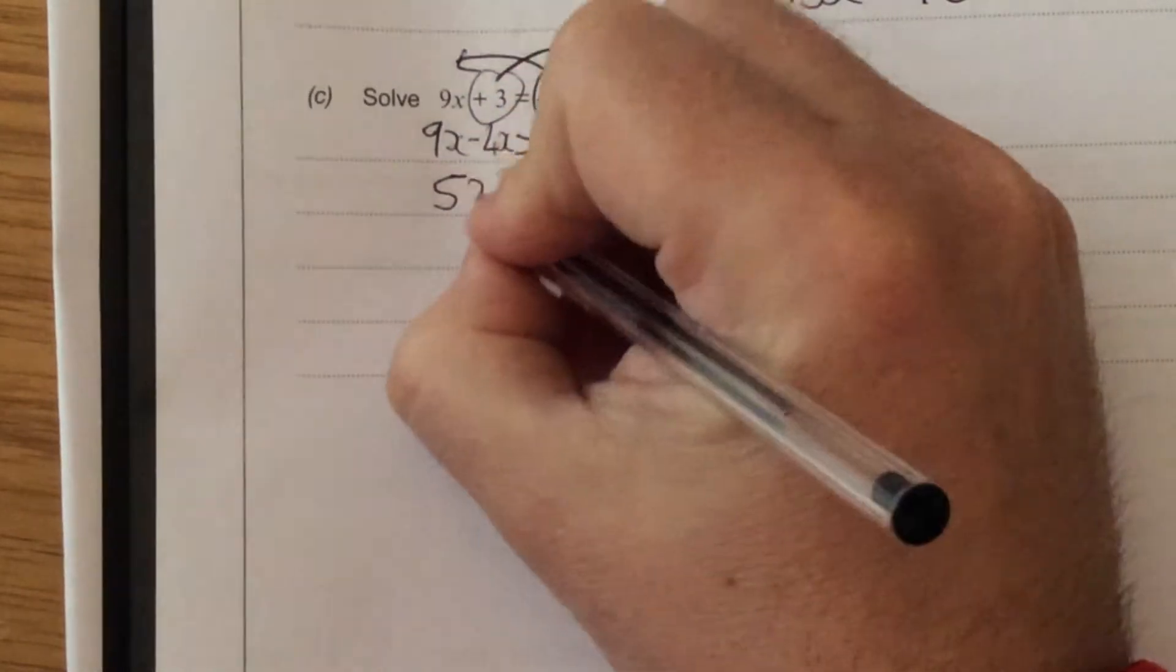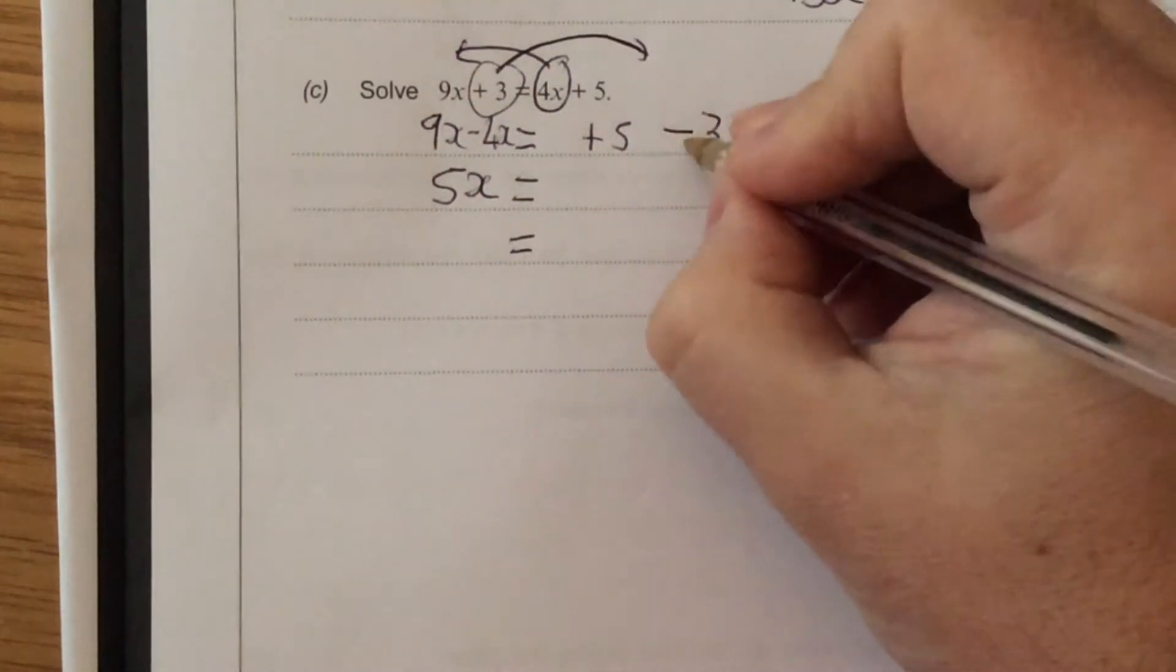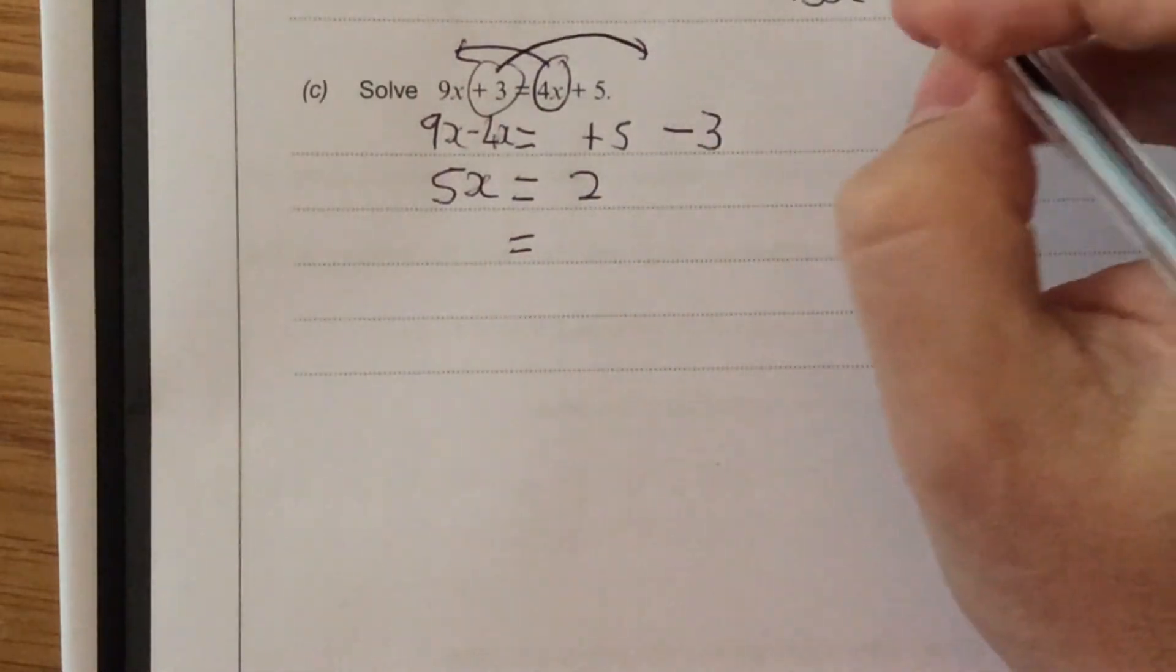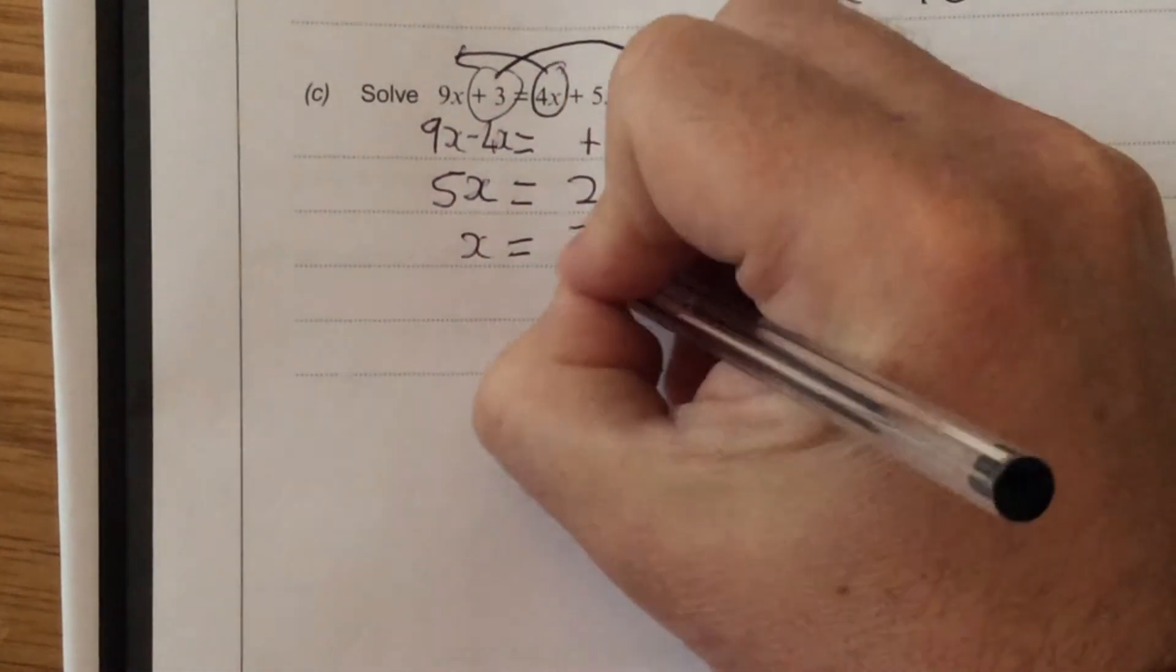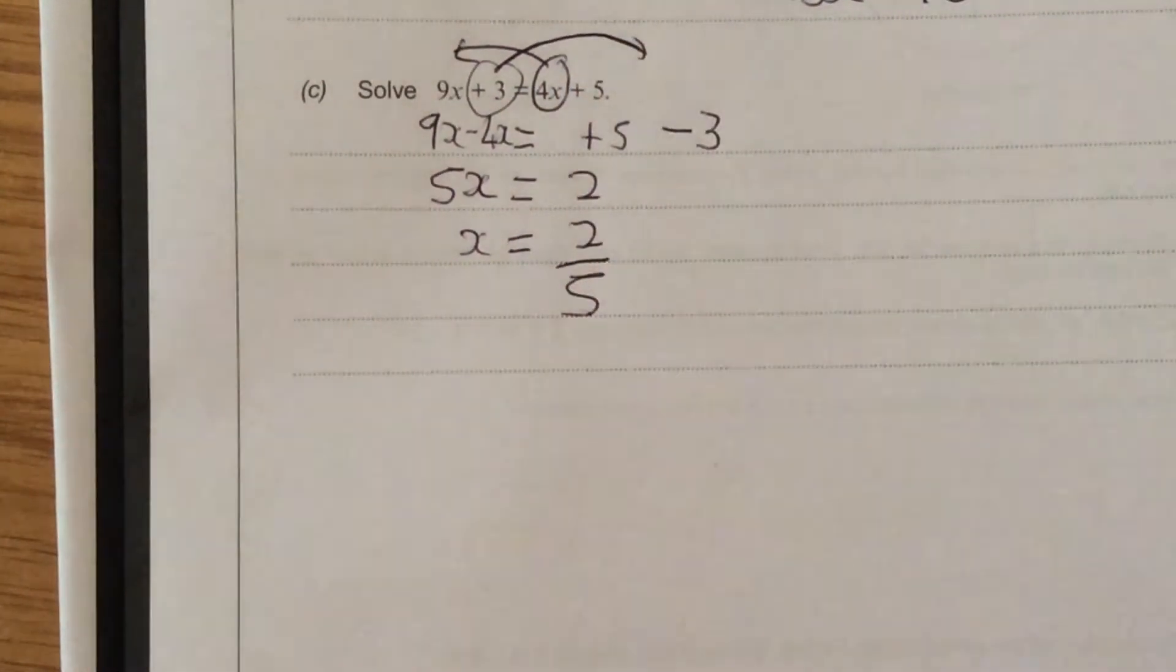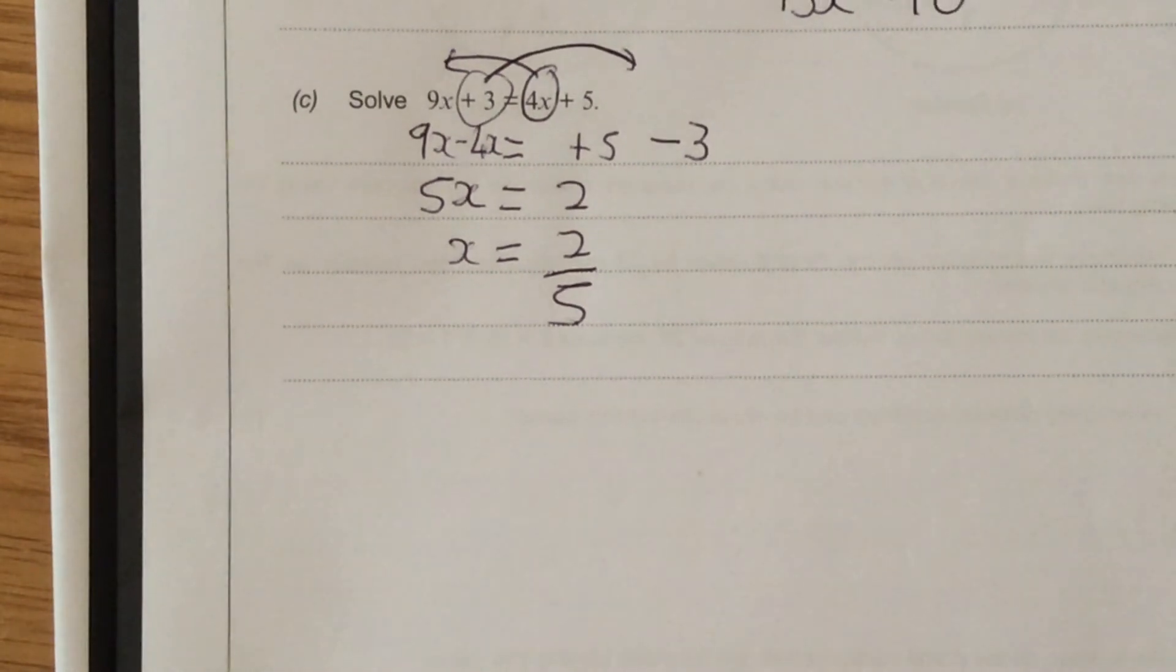9 take away 4 is 5, so 9x take away 4x is 5x. 5 take away 3 is 2, and then you divide by the number in front of x, so x is equal to 2 fifths.